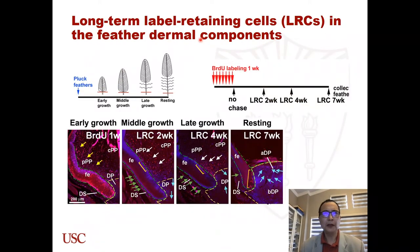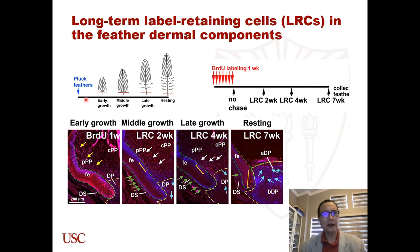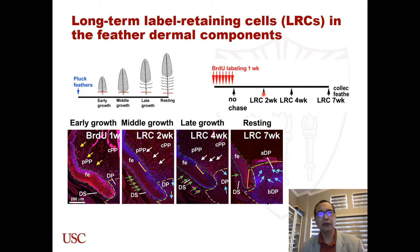We further examined the label-retaining cells in the feather follicle. Label-retaining cells are slow-cycling cells and are putative stem cells. We plucked the contour feather, let it regenerate, and labeled with BrdU for one week. After labeling, we collected the feather immediately, or at two weeks, four weeks, or seven weeks, to find the LRC distribution in different stages of feather regeneration.